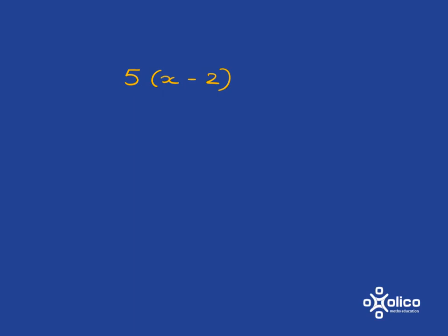So when we go to multiply this out, we first have to multiply 5 with the x and we get 5x. 5 times x, 5x. And then we're going to multiply the 5 with the 2. And there's still a minus sign and 5 times 2 gives us 10.